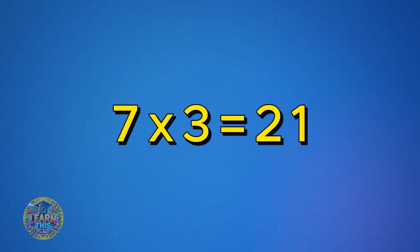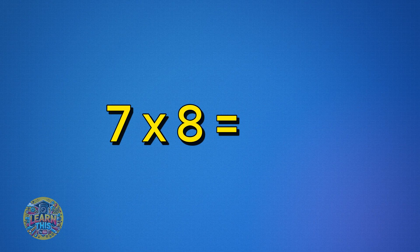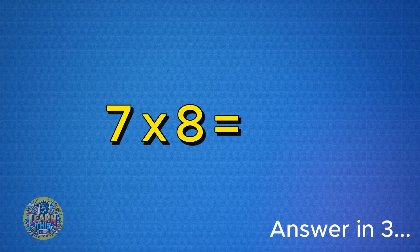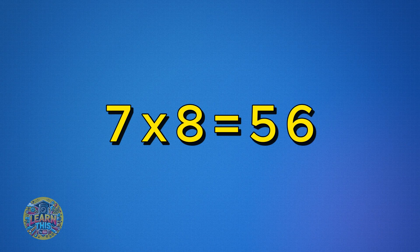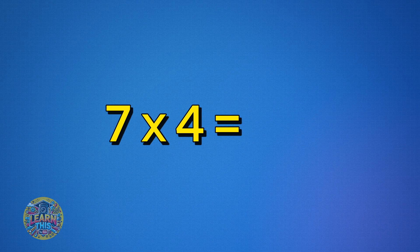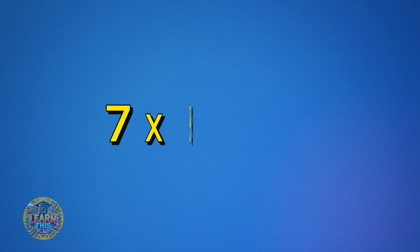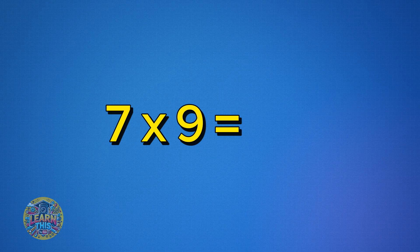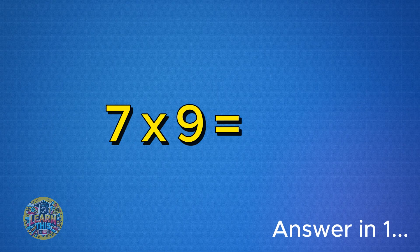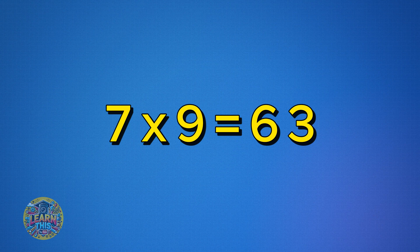Seven times three is 21. Seven times four is 28. Seven times nine is 63.